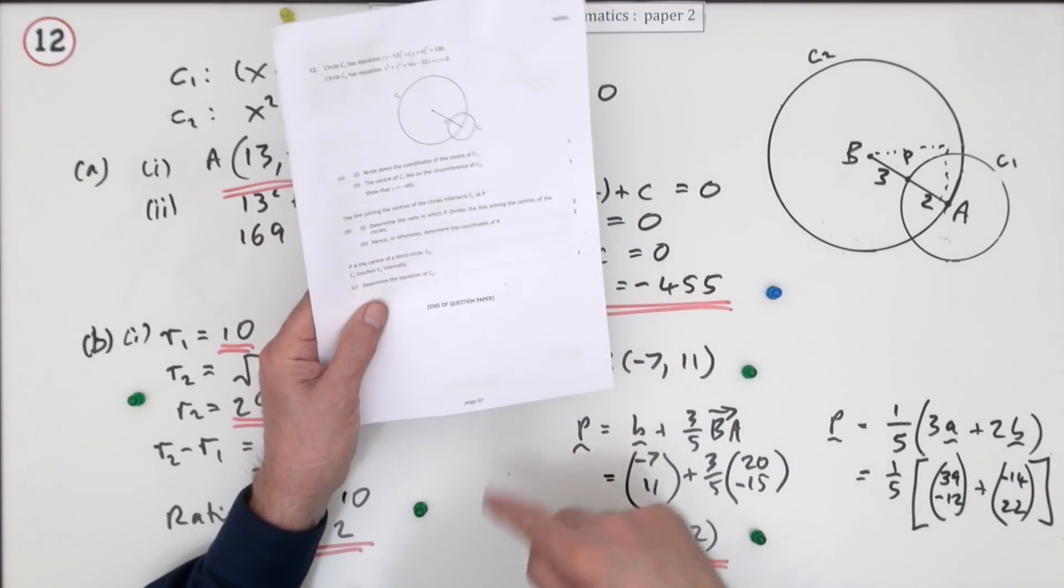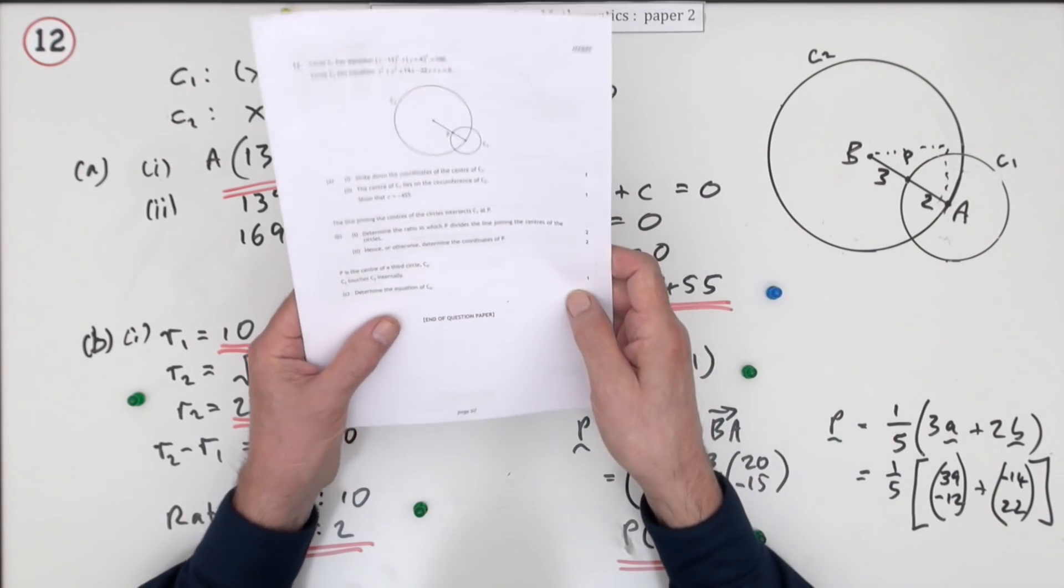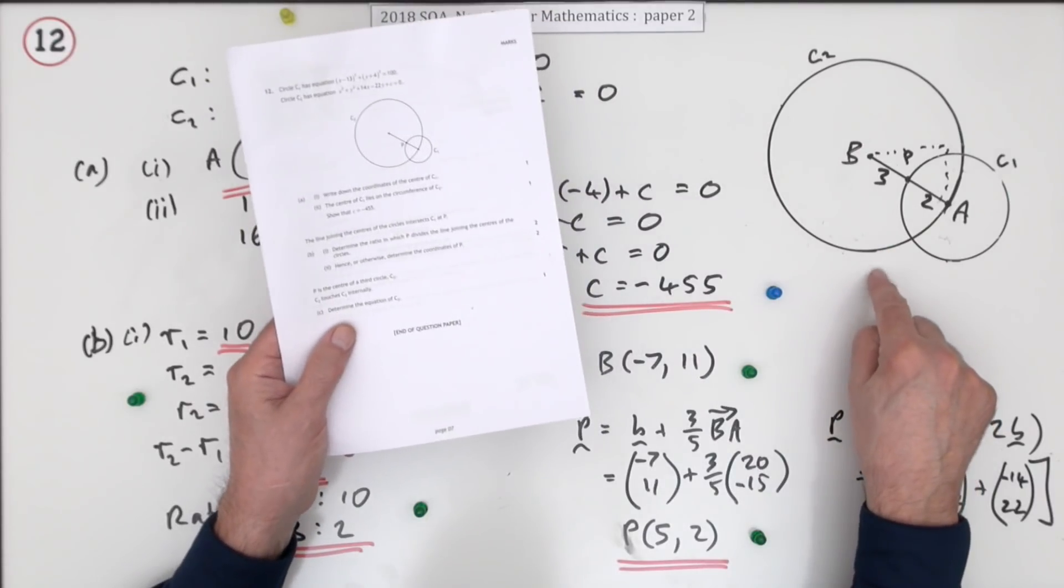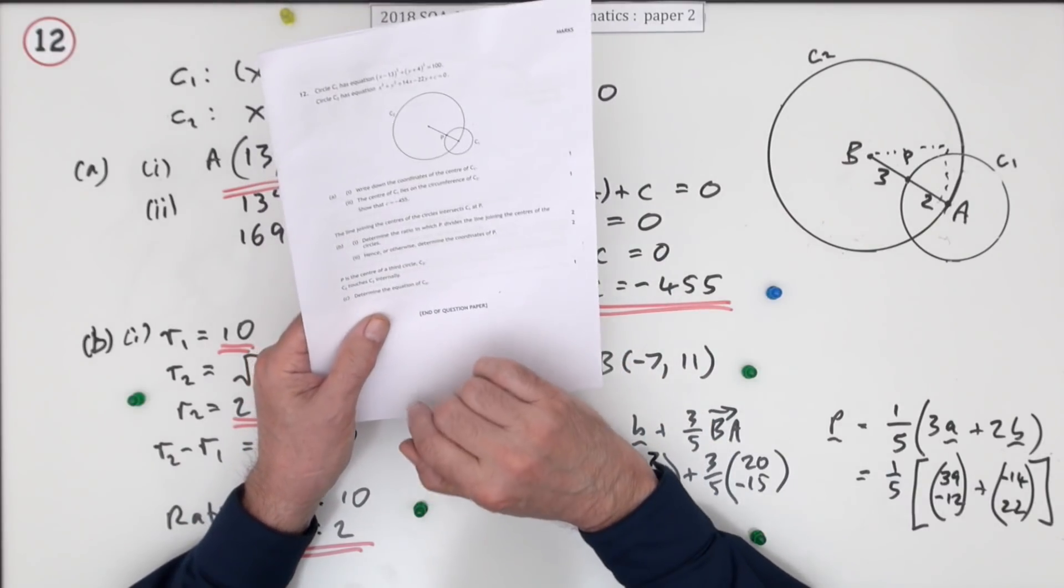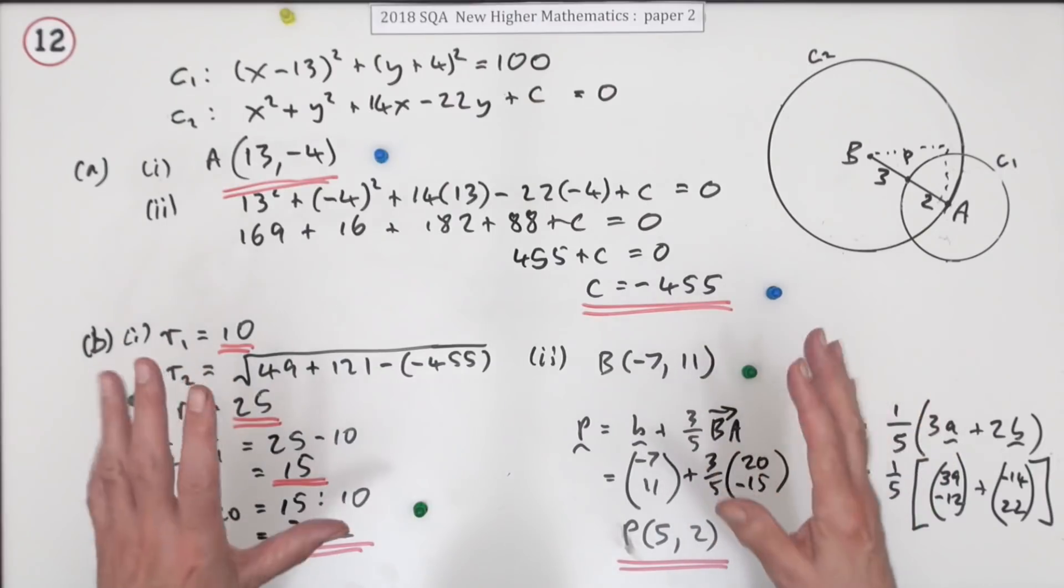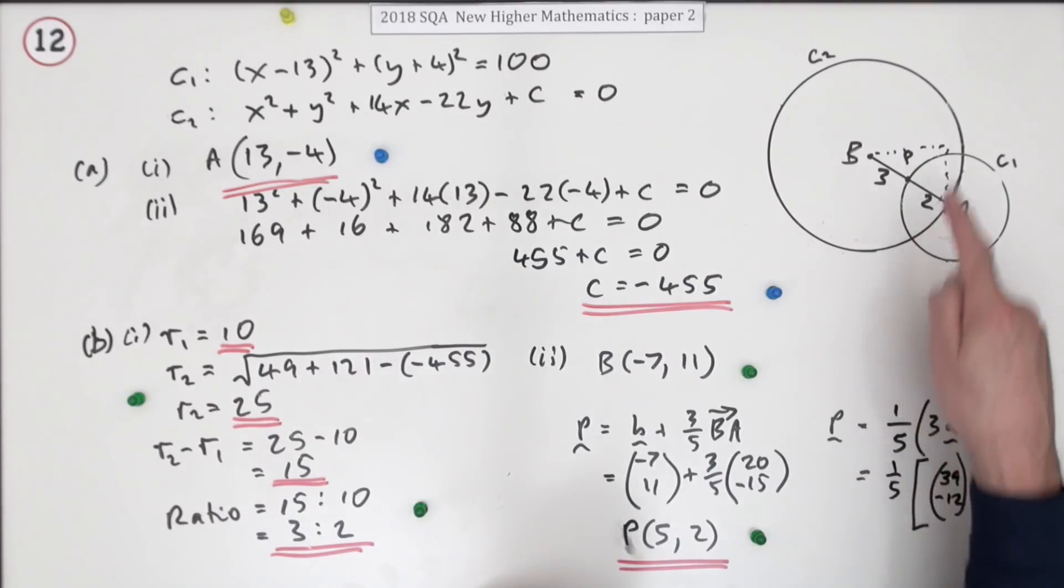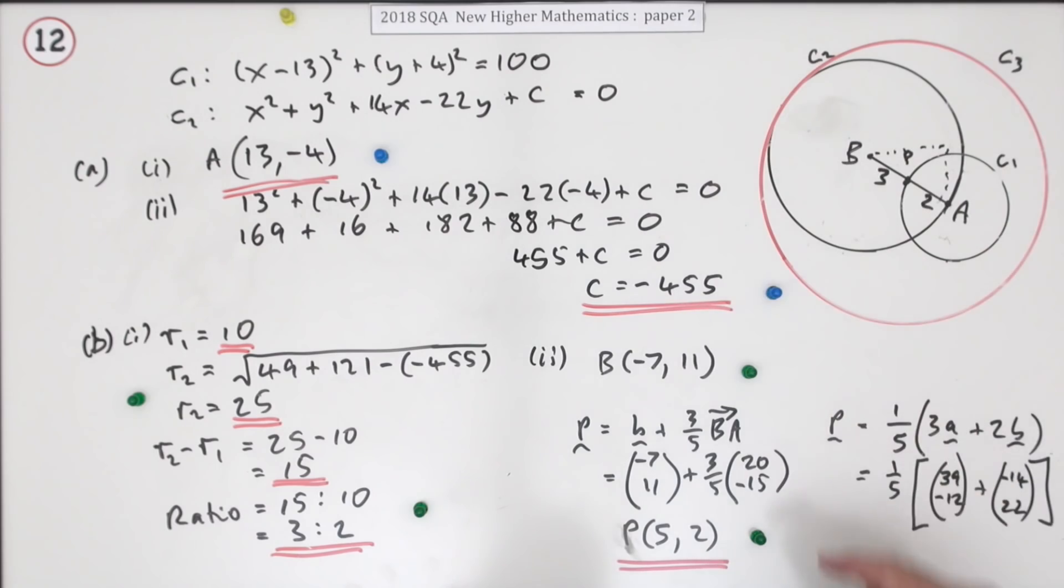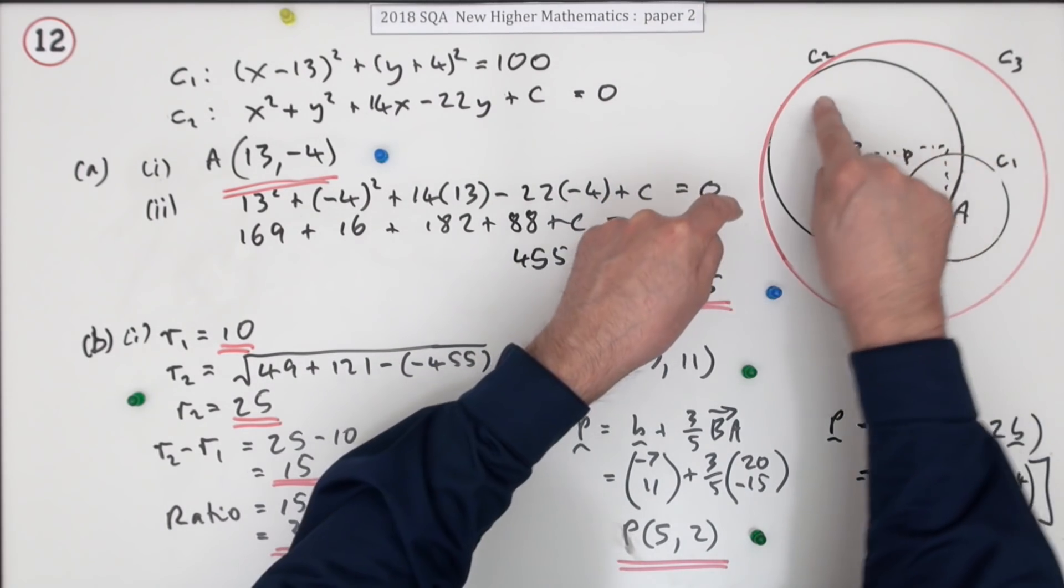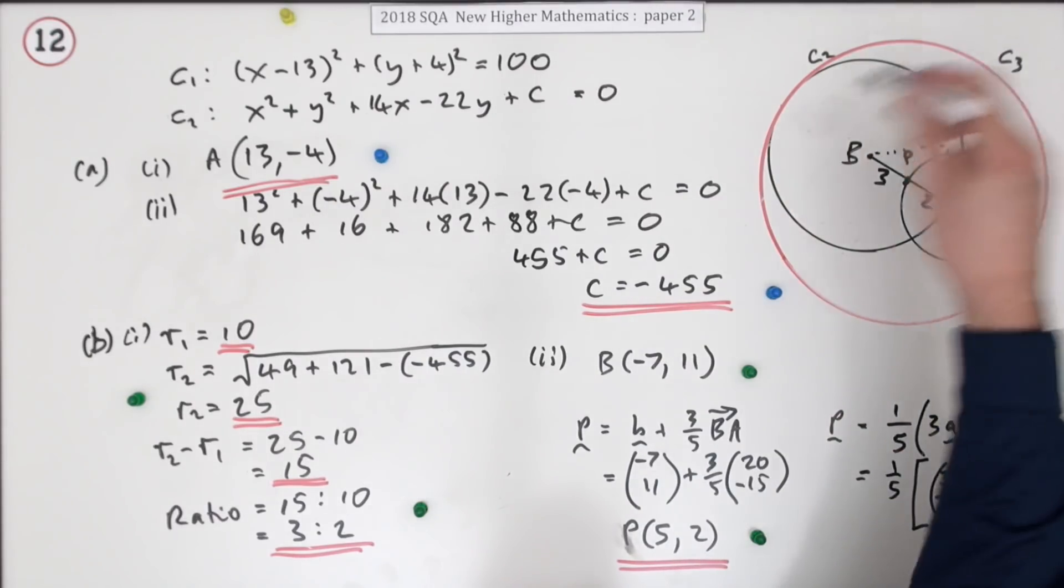This contentious last part: the marking scheme just states the required equation with no comments, but I know at the time there was some confusion over interpretation because there's a certain ambiguity. What they meant was C2 had to touch C3, so this third circle expands and engulfs the whole diagram. C2 is on the inside, touching C3 internally.